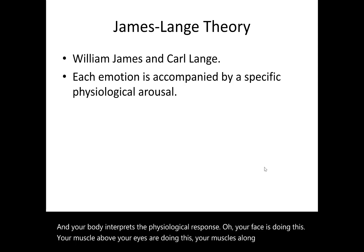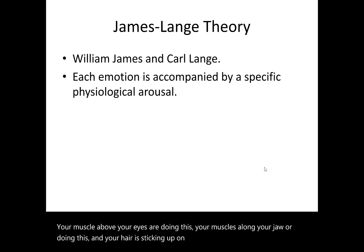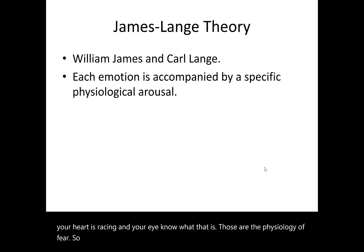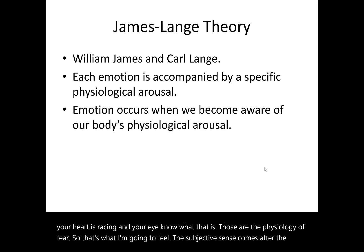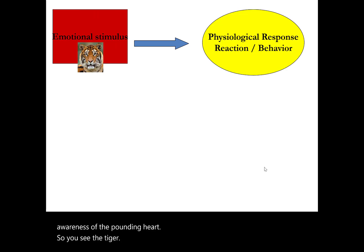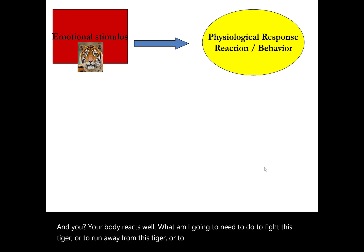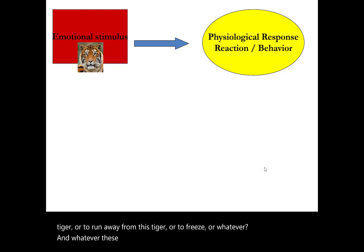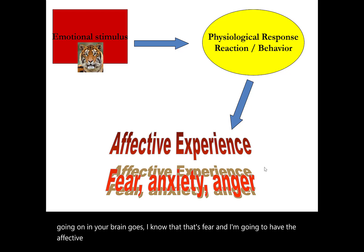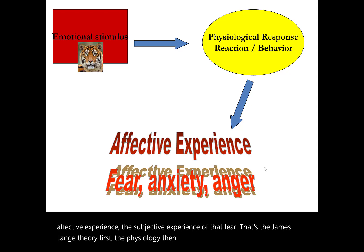According to James-Lange, emotions occur when we become aware of the body's physiological arousal — awareness of the pounding heart. You see the tiger, your body reacts, whatever physiology and facial expressions and muscle activity is going on, your brain goes 'I know that — that's fear — and I'm going to have the subjective experience of that fear.' That's the James-Lange theory: first the physiology, then the subjective sense of the emotion.